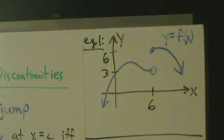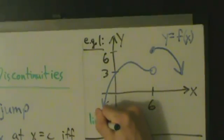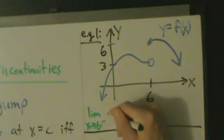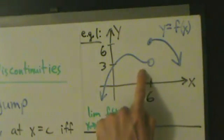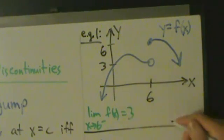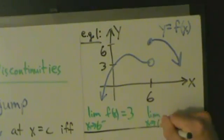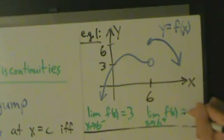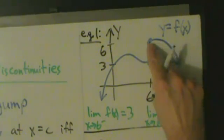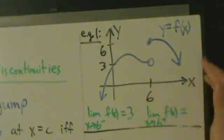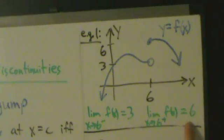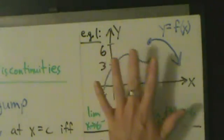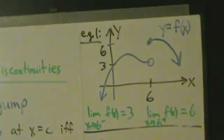Example one. Here's our function y equals f of x. Let's take a look at the one-sided limits. The limit as x approaches 6 from the left of f of x: if we come into 6 from the left, it looks like y is going to go to 3. So this limit is 3. But if we come into 6 from the right, the y values are going to 6. So the left-hand limit is 3, the right-hand limit is 6, so this function has a jump discontinuity at x equals 6.